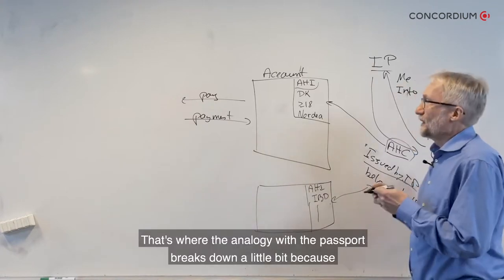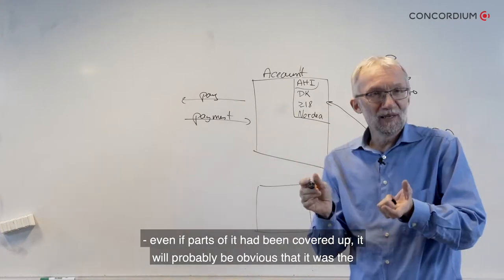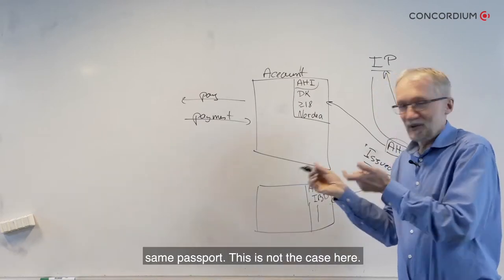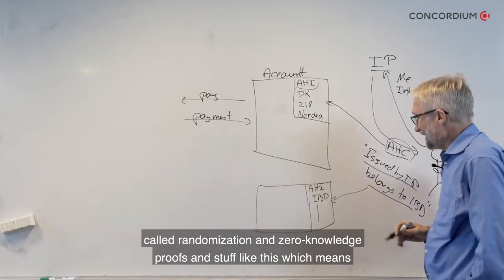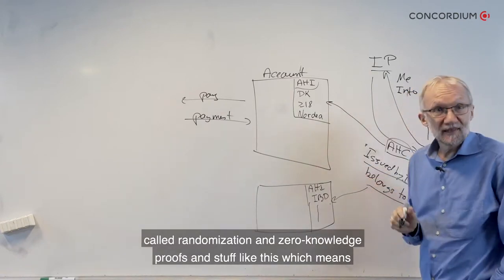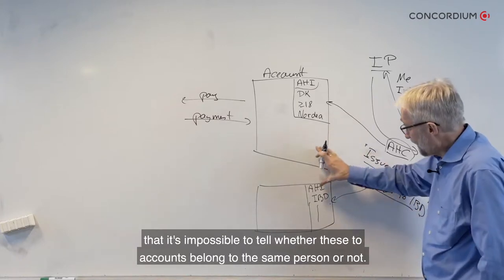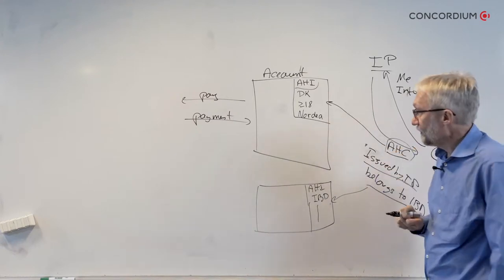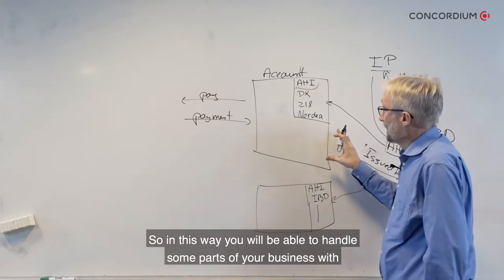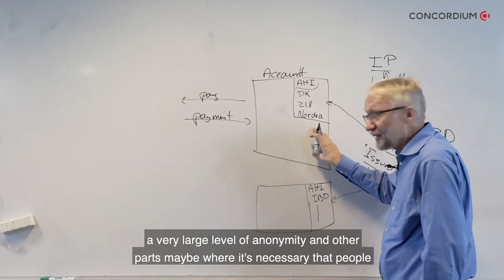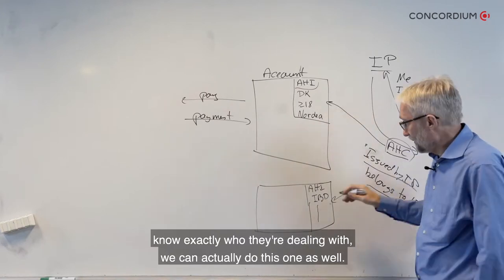That's where the analogy with the passport breaks down a little. If you had shown the same passport several times, even with parts covered, it would probably be obvious it was the same passport. This is not the case here. We are able to do certain tricks with things called randomizations and zero-knowledge proofs, which means it's impossible to tell whether two accounts belong to the same person or not. In this way, you can handle some parts of your business with a very large level of anonymity, and other parts where it's necessary that people know exactly who they're dealing with.